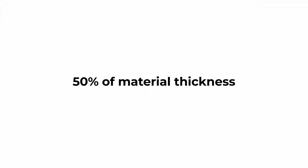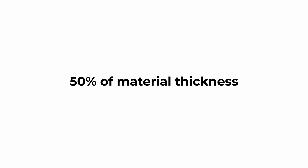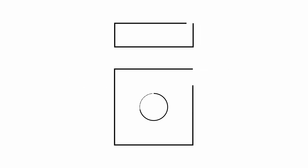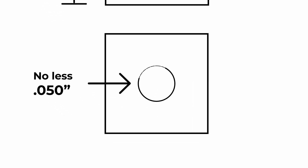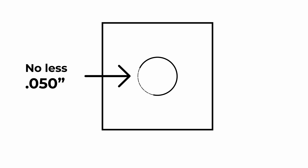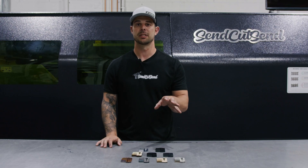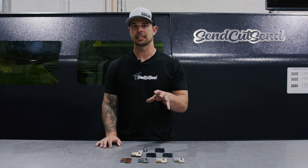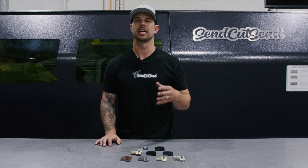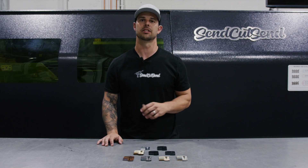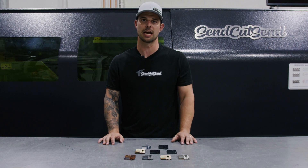As a general rule, we like to stay at 50% of the material thickness for internal geometries. So let's look at a quick example. We have a material thickness of 100 thousandths, so our internal geometry — say a hole — can be no smaller than 50 thousandths of an inch in diameter. Different material thicknesses and manufacturing methods change the size of internal geometry that you can use when designing.